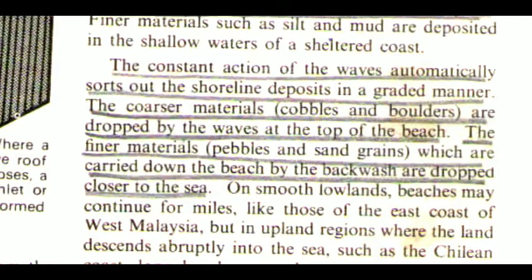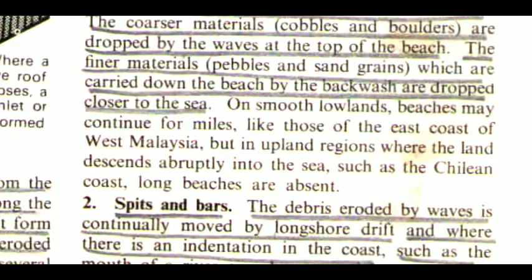At the same time, the backwash removes part of the material seawards along the bed of the sea and deposits it on the offshore terrace, and even beyond, finer materials such as silt and mud are deposited in the shallow waters of the sheltered coast. The constant action of the waves automatically sorts out the shoreline deposits in a graded manner. The coarser materials — cobbles and boulders — are dropped by the waves at the top of the beach. The finer materials — pebbles and sand grains — which are carried down the beach by the backwash, are dropped closer to the sea. On smooth lowlands, beaches may continue for miles, like those of the east coast of West Malaysia. But in upland regions where the land descends abruptly into the sea, such as the Chilean coast, long beaches are absent.